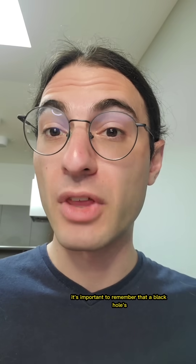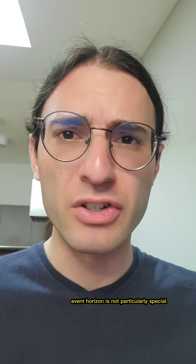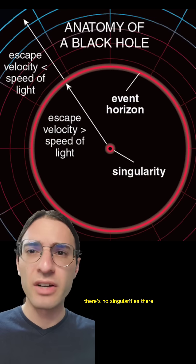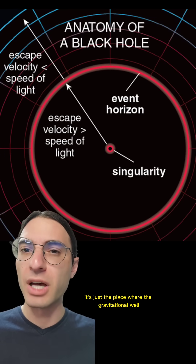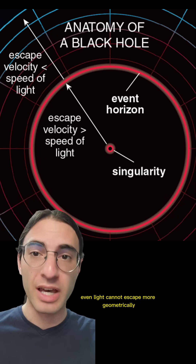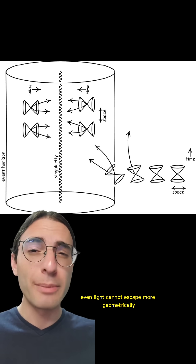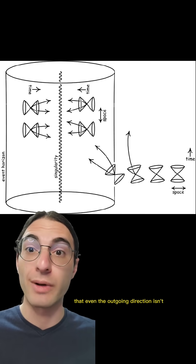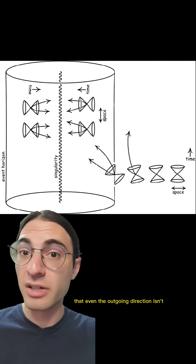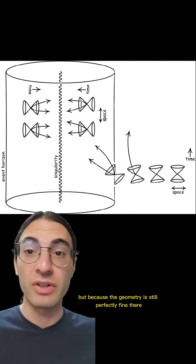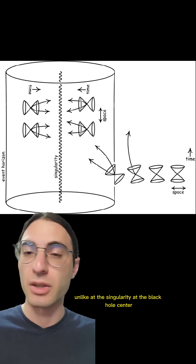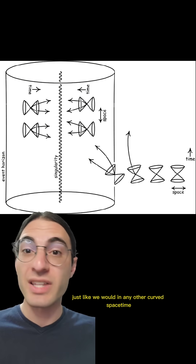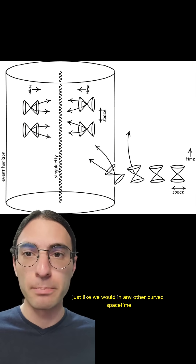First, it's important to remember that a black hole's event horizon is not particularly special from a geometric point of view. There's no singularities there — it's just the place where the gravitational well becomes so deep even light cannot escape. More geometrically, it's the place where spacetime becomes so warped that even the outgoing direction isn't. But because the geometry is still perfectly fine there, unlike at the singularity at the black hole's center, we can talk about quantum fields there just like we would in any other curved spacetime.